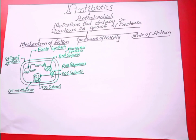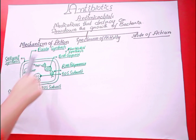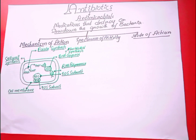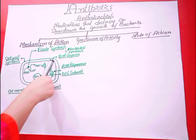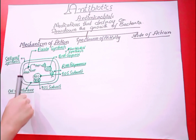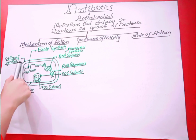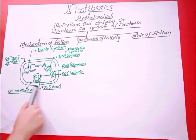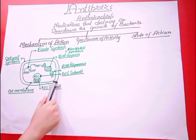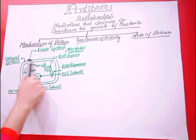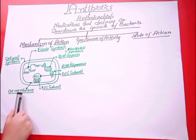On the basis of mechanism of action, there are 5 subclasses of antibiotics. To understand these classes, I have drawn a bacterial cell diagram. Here you can see the cell wall, which is the outermost structure of the bacterial cell. The inner structure is the cell membrane.